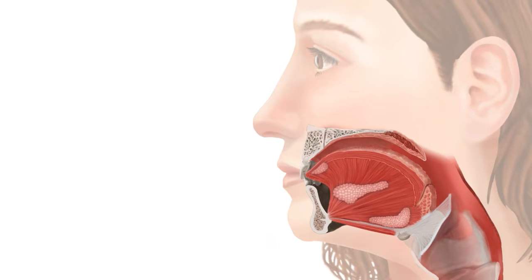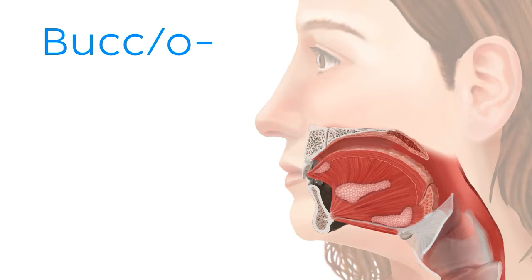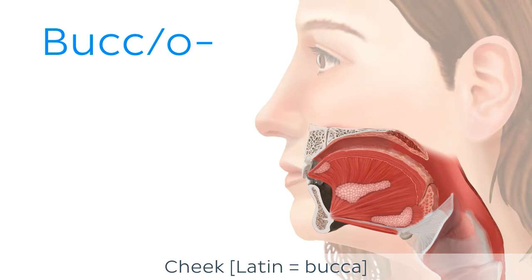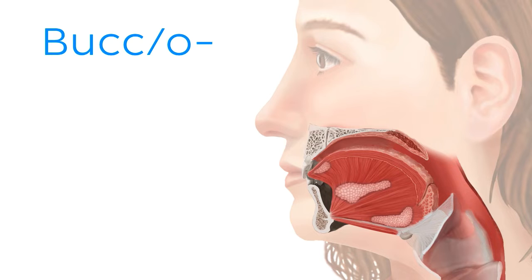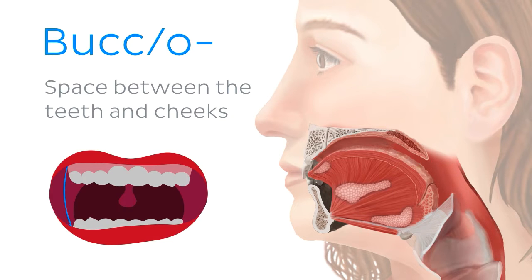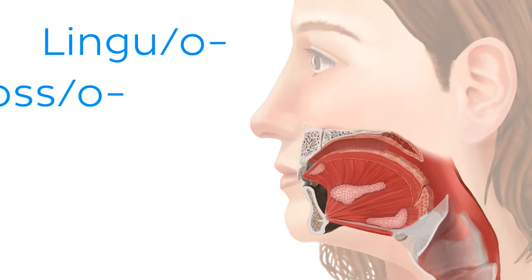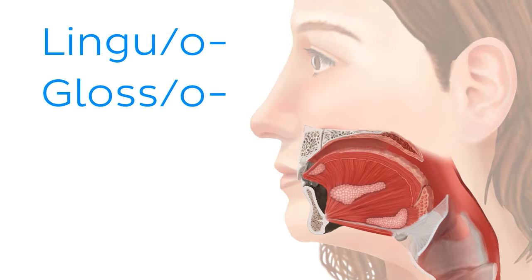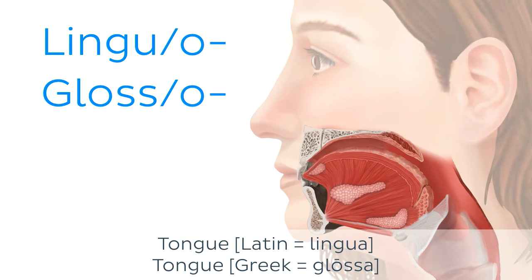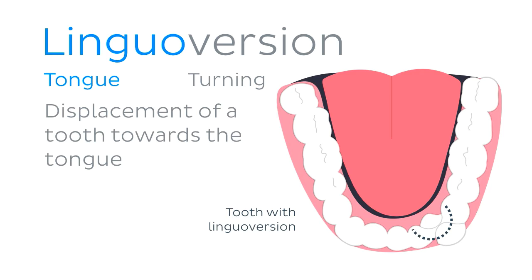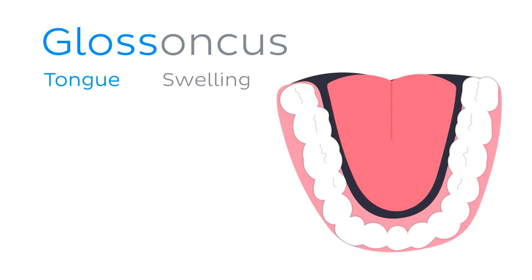Now staying in the region of the mouth, we have several other root words which pertain to specific parts or structures here. For example, 'bucc' or 'bucco' with the O at the end, which refers to the cheeks — the buccal cavity is the space between the teeth and cheeks. 'Lingu' or 'linguo', or 'gloss' or 'glosso', are both root words pertaining to your tongue. For example, linguoversion is the displacement of the tooth towards the tongue, while glossonchus describes swelling of the tongue.